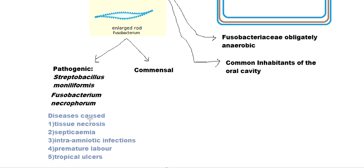This type of bacteria also causes intra-amniotic infections such as premature labor, and tropical ulcers. Ulcers are swollen areas in the skin or in the mouth, since these bacteria are common inhabitants of the oral cavity.